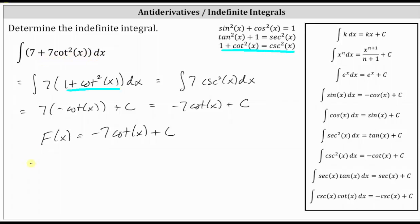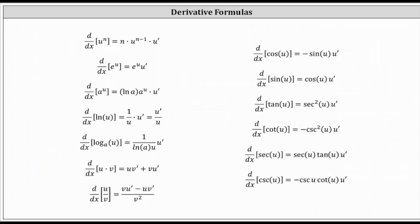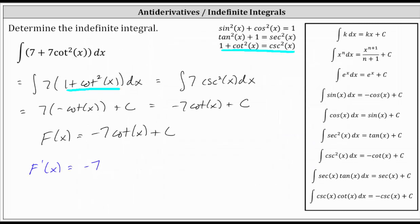And let's go ahead and check this. If we differentiate big F of x, we have negative seven times the derivative of cotangent x, which is to review equal to negative cosecant squared x. And the derivative of the constant c is zero. Simplifying here, we have seven cosecant squared x.